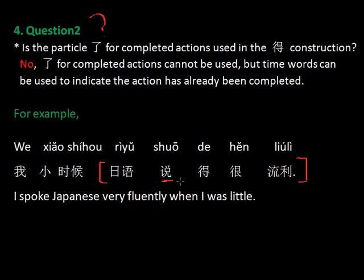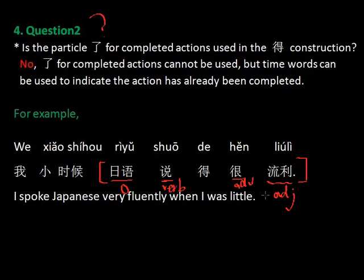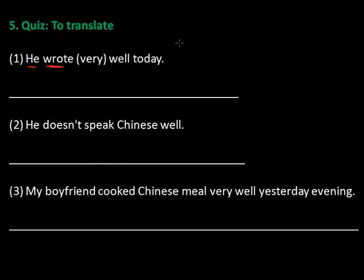首先动词 verb 是 speak，and I want to describe the action is fluently。流利是这个 adjective，然后 very 就是一个 adverb：很流利。Verb plus 得：说得很流利。这个 object 是日语：日语说得很流利。所以在这个句子中，we needn't use 的 here。